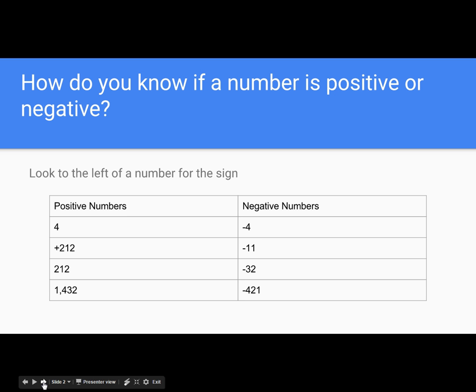To determine if a number is positive or negative, you look immediately to the left. If the number has a plus sign or no sign, then that number is positive. If to the left there is a subtraction, minus or negative sign, that number is negative.